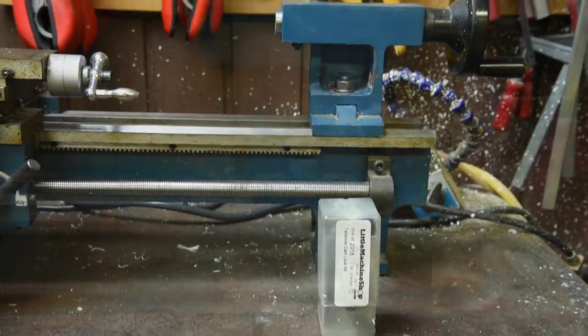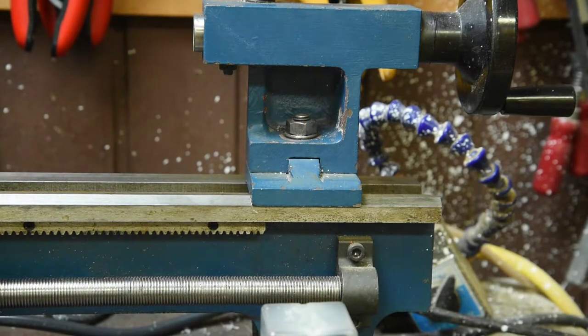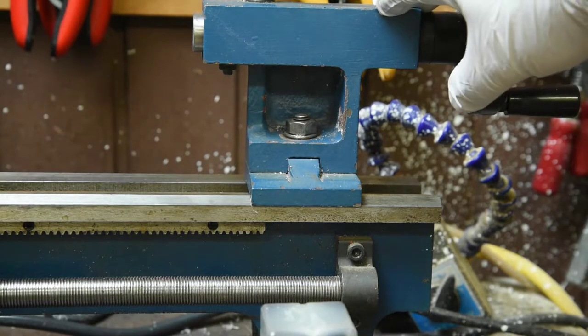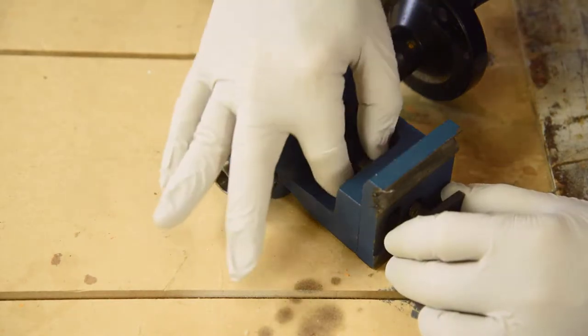I'm going to install it on a Tools Now number 5278 mini lathe. The only thing that has to be done to the tailstock is drill a half inch hole in the right place. Getting to that right place will be the adventure.